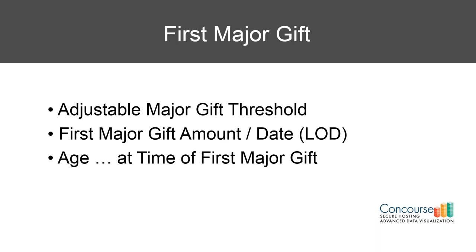Finally, we'll be looking at age — but one of the mistakes people make is analyzing the current age of the constituent. What we actually want to see is what their age was at the time they made that first major gift. If you're looking back historically, someone may have made that first major gift 10, 15, or 20 years ago, and their current age doesn't tell you what you're trying to find out — how old they were at the time, because you're trying to identify characteristics for future prospects with similar profiles. All right, enough of me yapping. Let's start building.